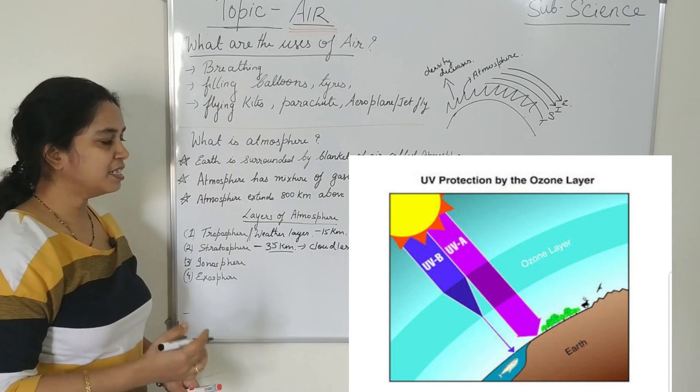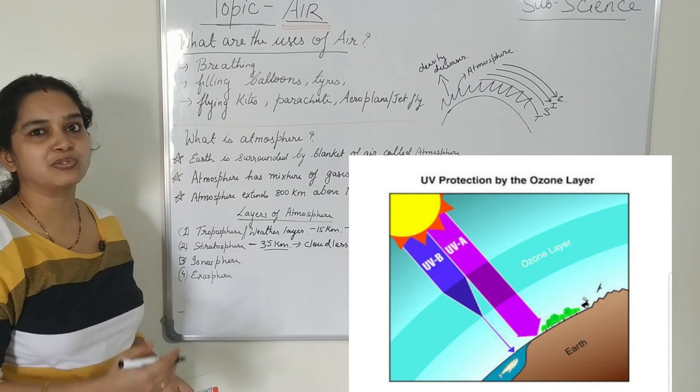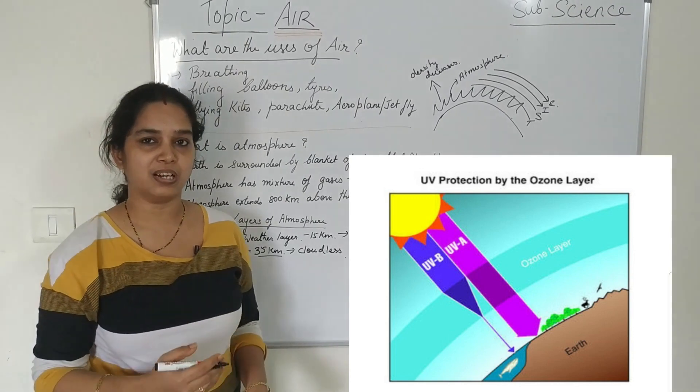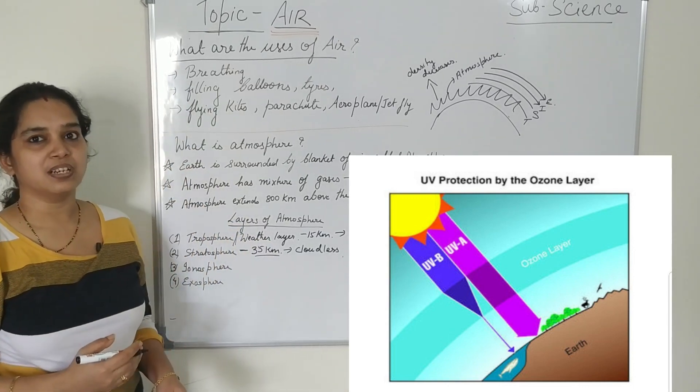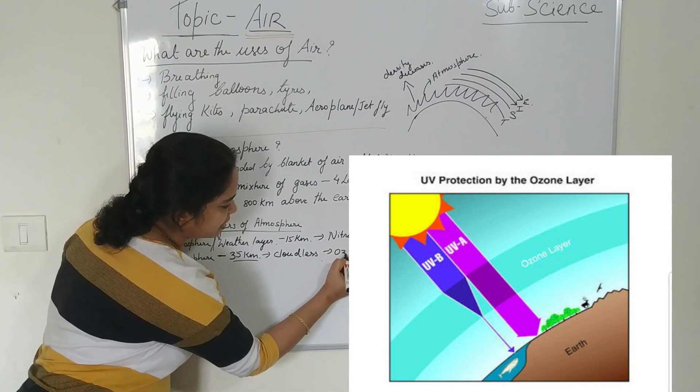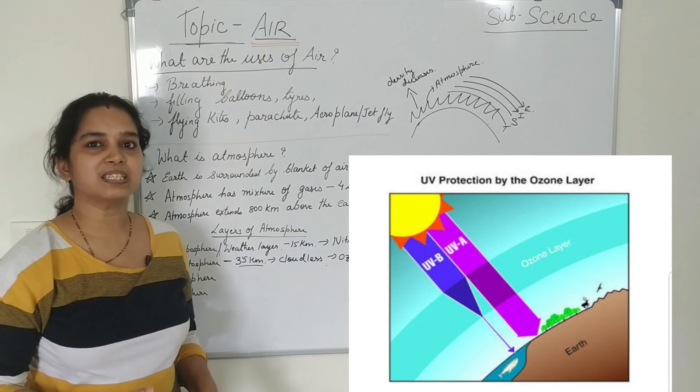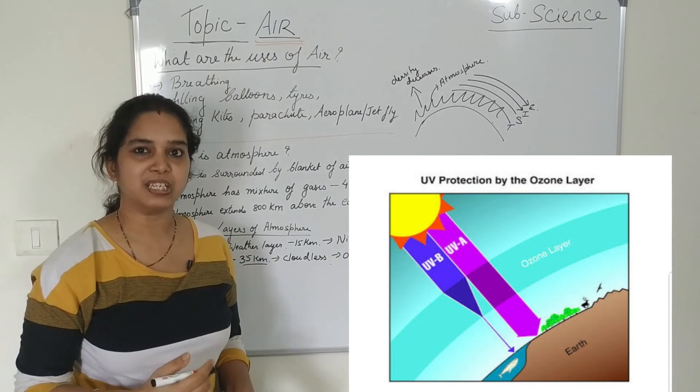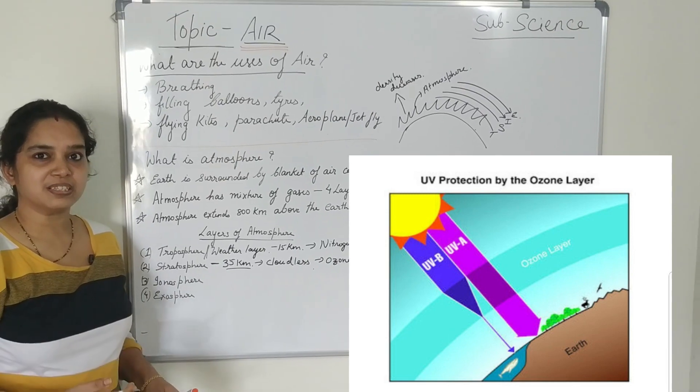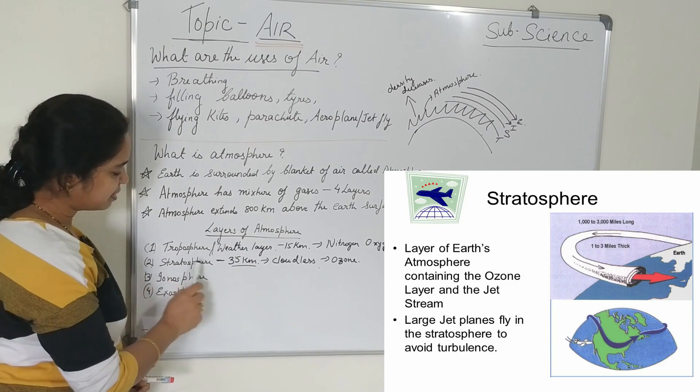And here the outermost layer of the stratosphere contains the ozone layer that shields the ultraviolet, the harmful ultraviolet rays of the sun from entering the earth's atmosphere. So it contains ozone, contains the ozone layer, which helps or it protects the ultraviolet rays from reaching the earth's surface. And because the ultraviolet rays is very harmful for the living organism. In this layer, mostly the jet planes and the aeroplanes fly.